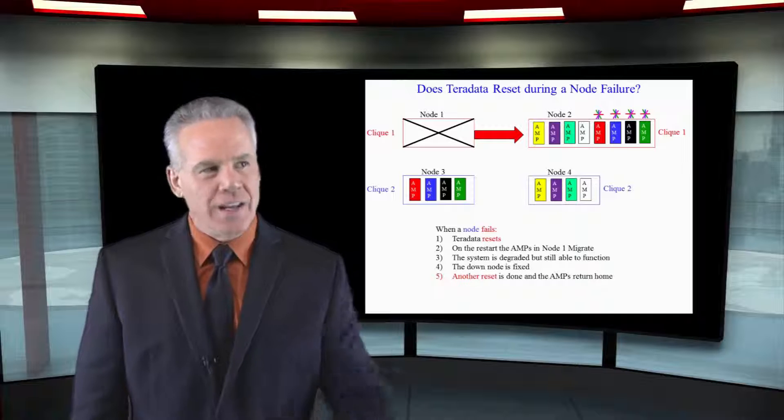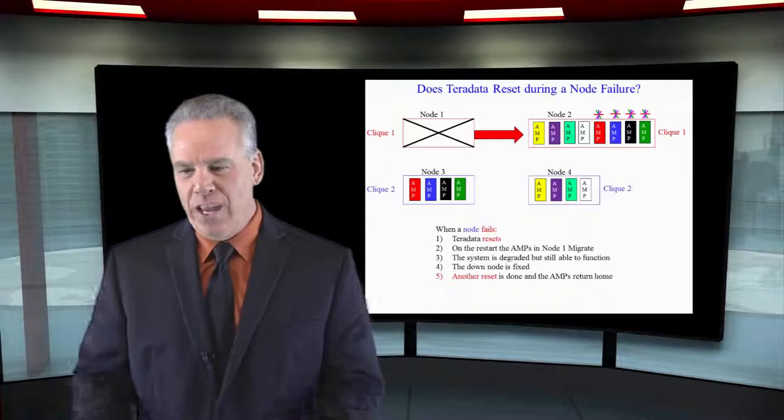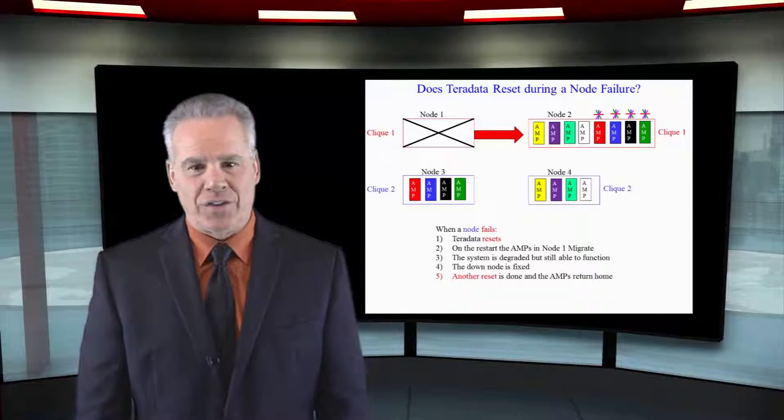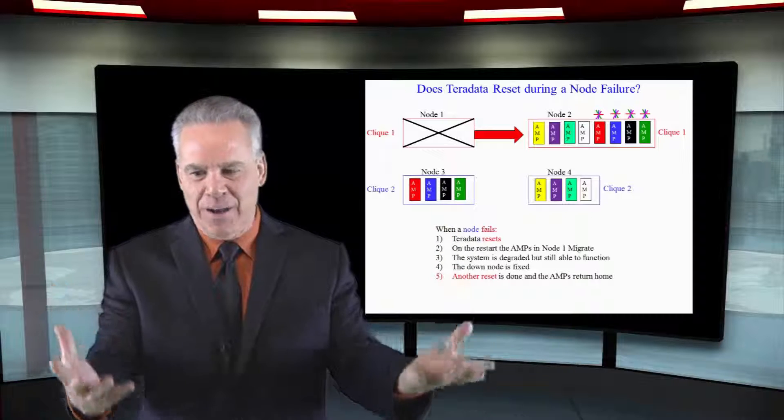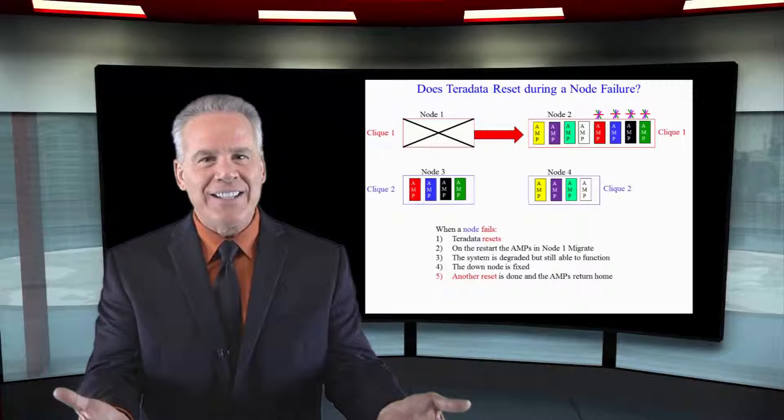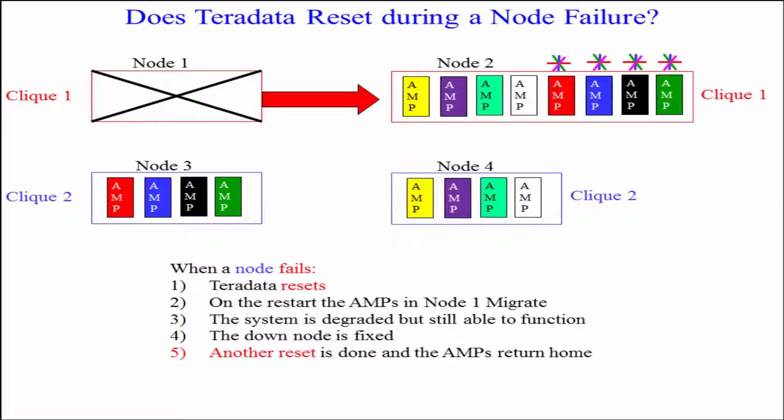You could take a grenade, toss it over your shoulder, it explodes node number one, and I go watch this. The system's going to actually come down and go, we need to reset, there seems to be a little problem. But as it comes up and node one is unavailable, Teradata recreates all of the amps there over in node two, which is in the same clique.